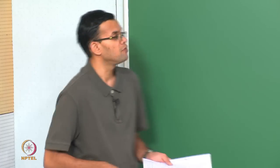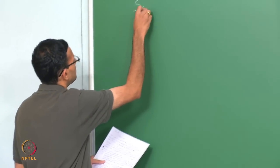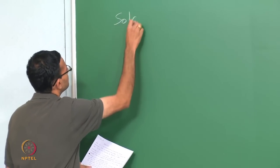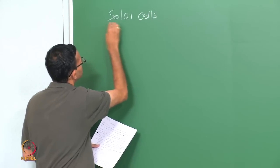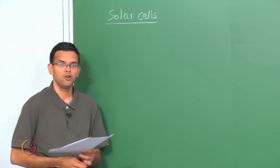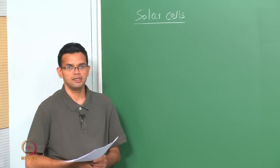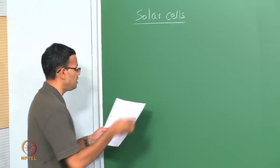Last class we looked at photodetectors. In the case of photodetectors, we had incident light onto your device which was converted into an electrical signal. Today we are going to look at solar cells. A solar cell is an example of a photovoltaic device.